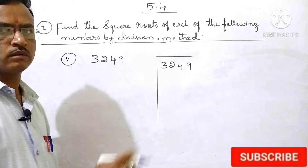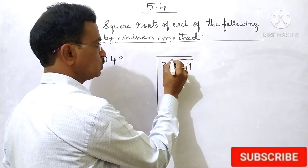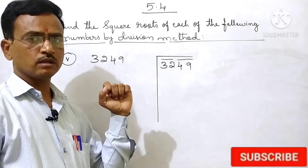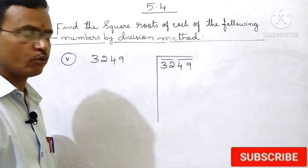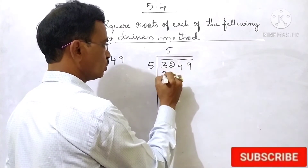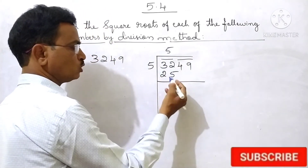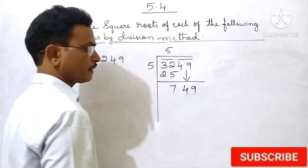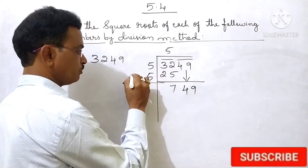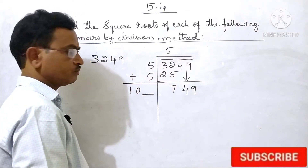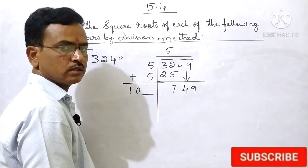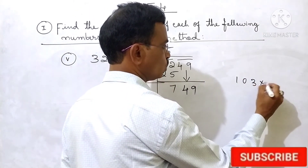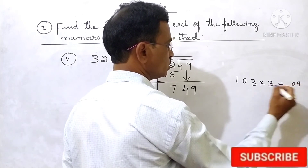3249. First 2 digits form one group, the next 2 digits form the second group. 32 is there. 6×6=36, which is greater than 32. So take 5×5=25. Now subtract 32 minus 25, here 7. Then take the next group 49. Make 5 double: 5 plus 5 becomes 10. Now put a blank. 9 is there in the unit place.